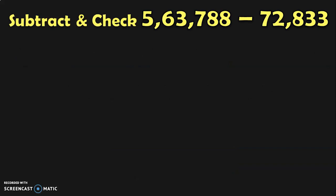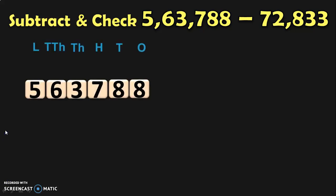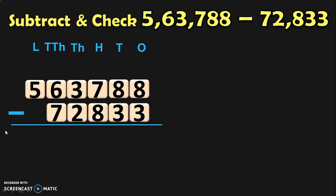Subtract and check: 5,63,788 minus 72,833. Here we are going to subtract a 5-digit number from a 6-digit number. First, write down the bigger number, and it is always a good practice to write down the place values so that you can write down the smaller number in its correct places. Write down the place values, then write down the smaller number, and begin the subtraction from the 1s place.